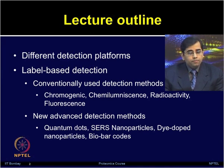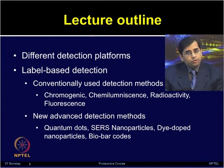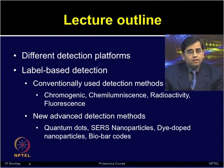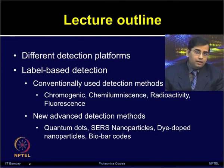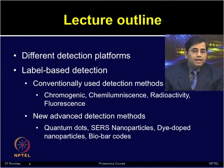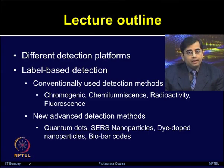We will focus more on label-based detection techniques, although for detection there are various types of label-free approaches also available, but those will be discussed separately. For label-based detection, there are several conventionally used systems such as chemiluminescence, chromogenic-based detections, radioactivity, and fluorescence techniques, which is most commonly and widely used. Several new advanced detection techniques are also emerging, which include quantum dots, SERS-based nanoparticles, dye-doped nanoparticles, bio barcodes, as well as many other nano-technique-based detection systems.